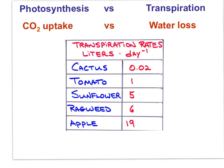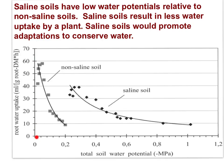Plants in very dry environments are well adapted to conserve water. Plants in wet environments need less regulation of water, so transpiration rates can be higher. Saline soils have low or more negative water potentials relative to non-saline soils, resulting in less water uptake by a plant. Thus, saline soils promote adaptations to conserve water. Adaptations to reduce water loss include reduced leaves or surface area, a low growth form, water storage tissue, shedding leaves seasonally, very deep roots, waxy cuticles, reduced stomata, and the C4 and CAM photosynthetic pathways.